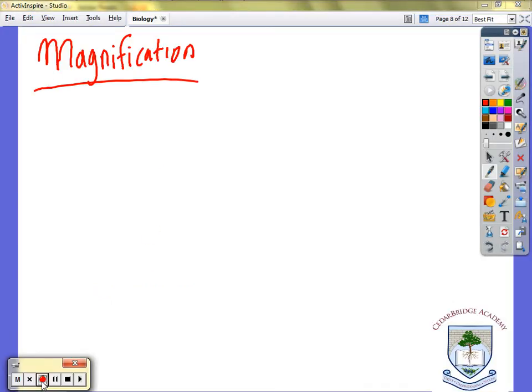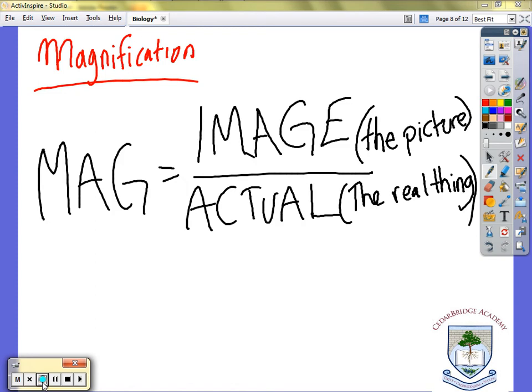Topic is magnification and it's just a formula and you need to know what the two points in the formula mean. So your formula is magnification equals image over actual.